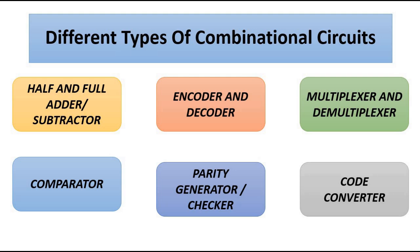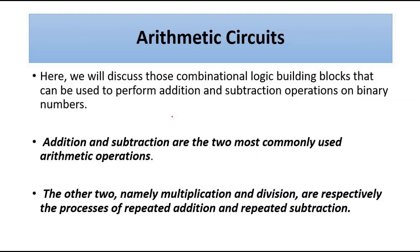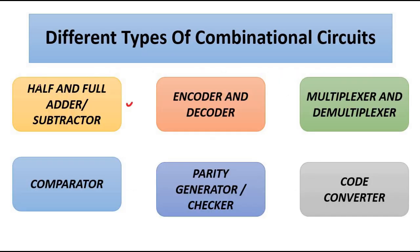We'll discuss a very simple combinational logic circuit, starting with arithmetic circuits. Arithmetic circuits are used for performing arithmetic operations: addition, subtraction, multiplication, and division. Basically, multiplication and division are processes of repeated addition and repeated subtraction, so they can use the same addition and subtraction circuits.